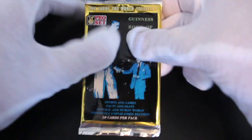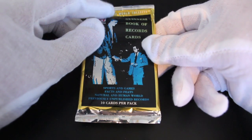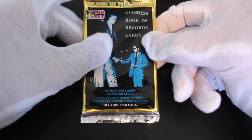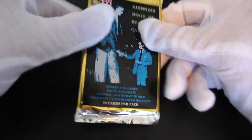Hello it's me Trading Card Tony with another pack. Today we've got Guinness Book of Records cards. It says Pro Set, obviously that's the company Pro Set, but hey I'm a pro so let's do this. 10 cards per pack.